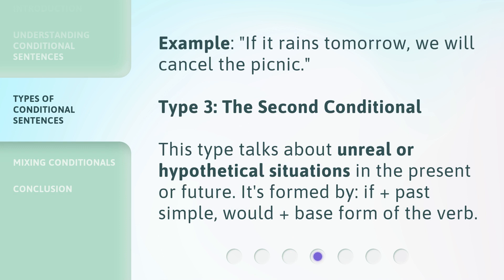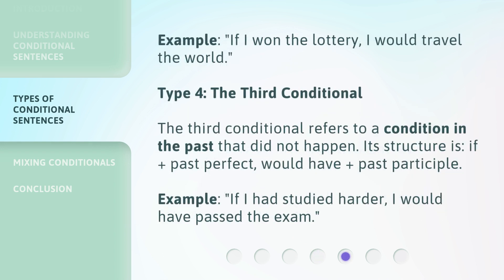Type 3: The Second Conditional. This type talks about unreal or hypothetical situations in the present or future. It's formed by: if plus past simple, would plus base form of the verb. Example: If I won the lottery, I would travel the world.